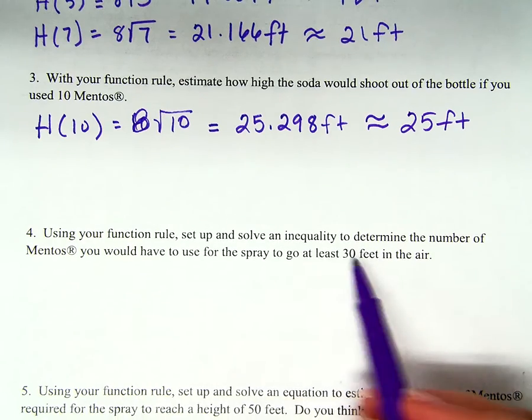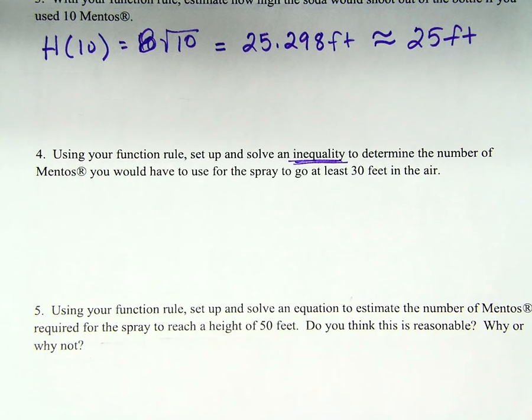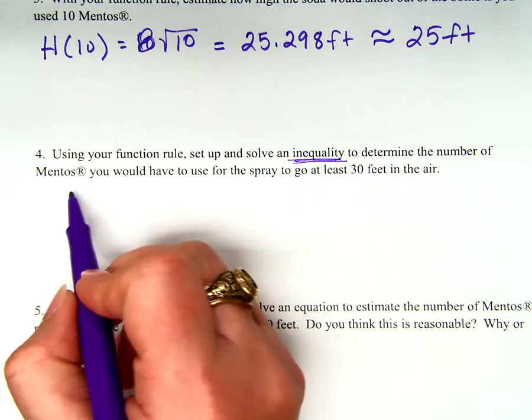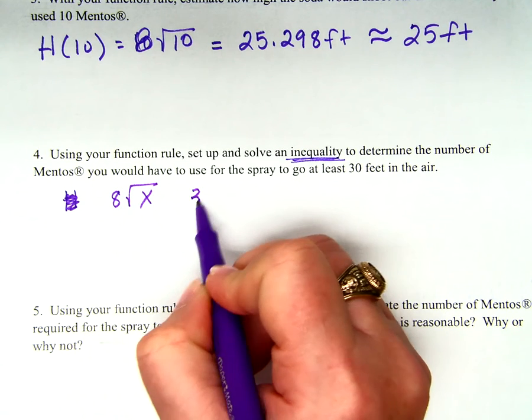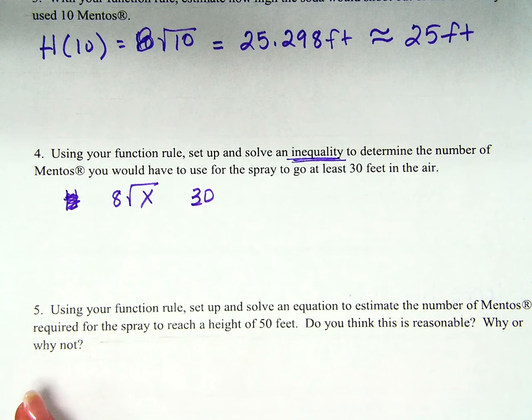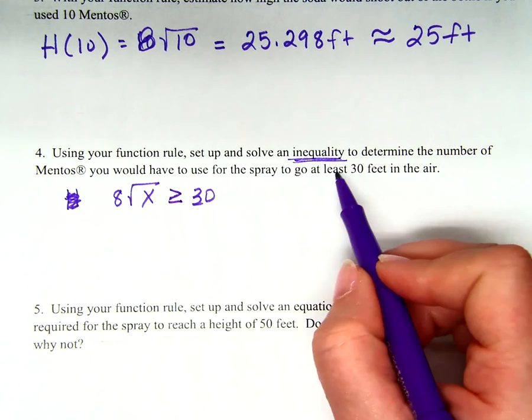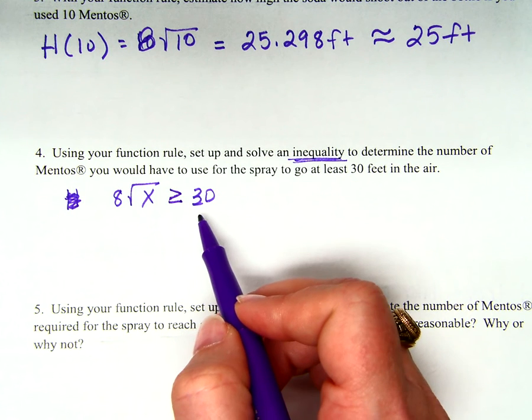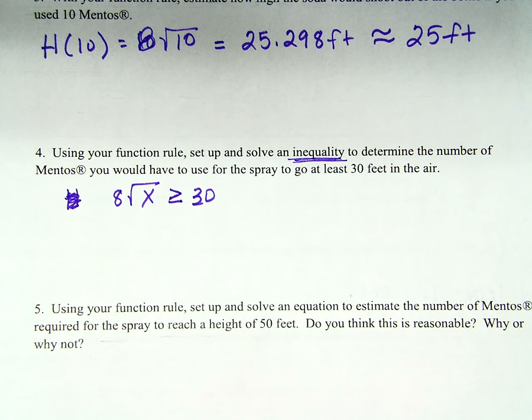Using your function rule, set up and solve an inequality. Guys, how many inequalities did we do this chapter? Zero. Okay? So our function rule, our function rule was 8 times the square root of x. It has to have something to do with 30. It has to go at least 30 feet in the air. What inequality symbol is going to go in between these? How about greater than or equal? It has to go at least 30 feet in the air, so it could be 30 or more, right? So I want you to solve this, and I want you to answer number 5 for tomorrow. Okay? Any questions? Any questions? Any questions?